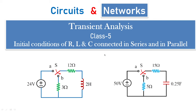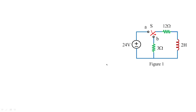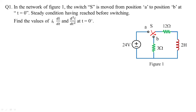We are treating this as class 5 and we'll work out the problem with Figure 1, where you can see 24 volts is supplying 12 ohms in series with 2 Henrys. This switching arrangement shifts the position from A to B, and we need to find how the inductor impacts the 3 ohms and how the current value — the change in current and the acceleration of current — are obtained at t = 0 plus. The switch moves from position A to position B at t = 0.